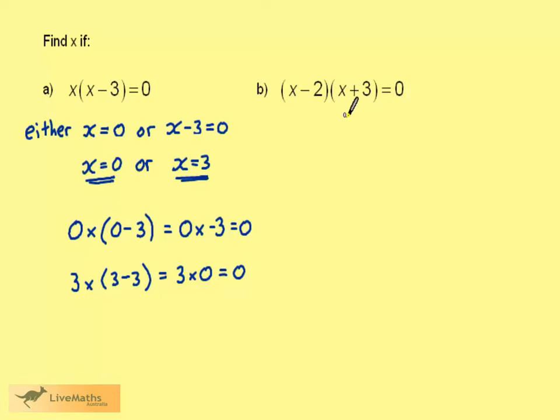Here we have x minus 2 times x plus 3 is 0. Either this first bracket is 0, which means that x minus 2 is equal to 0. Or the second bracket is 0, which means that x plus 3 is equal to 0. Adding 2 to both sides here gives x is equal to 2. Subtracting 3 from both sides here gives that x is equal to minus 3.